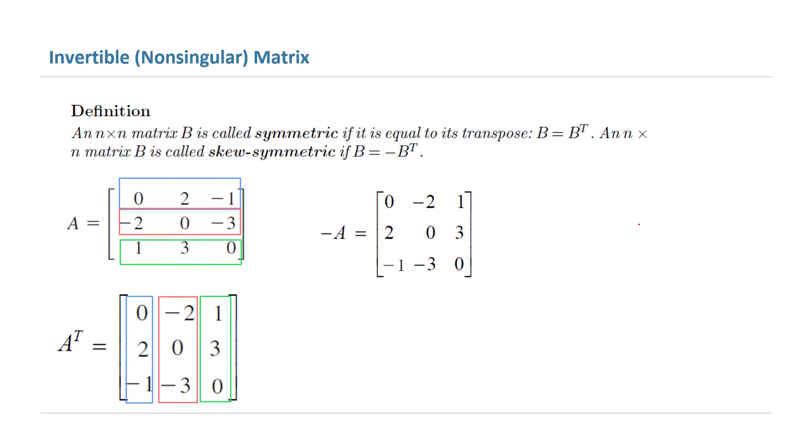But take a look. Negative A and the transpose are equal to each other. So since these two are equal to each other, it means that you have a skew-symmetric matrix.